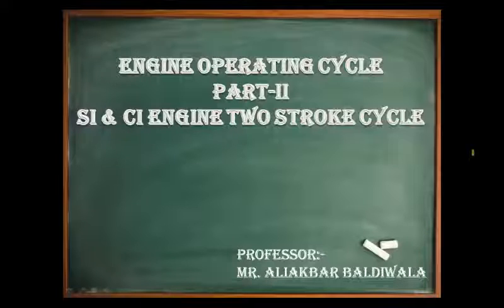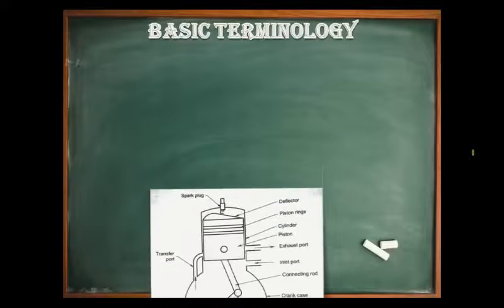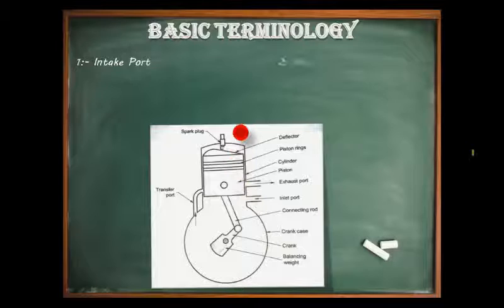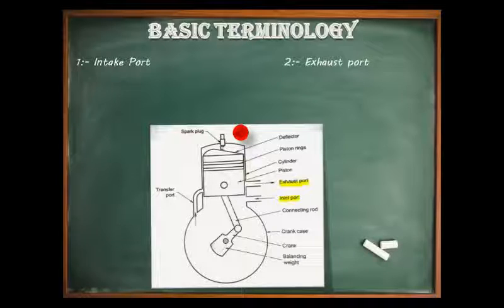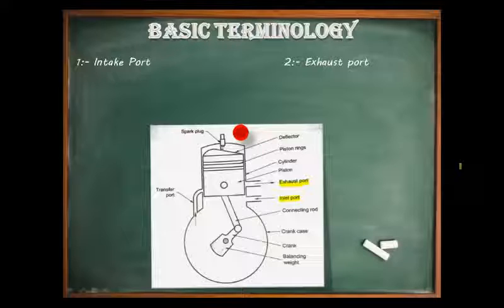Before jumping to the working cycle of a SI engine, let us first clear some basic terminology used in two-stroke engines. First is intake port and second is exhaust port, as we can see in this picture. In contrast to the four-stroke engine which uses inlet and exhaust valves controlled by a cam and camshaft mechanism, a two-stroke engine employs a port mechanism which doesn't require any sophisticated technique. All functions of intake and exhaust port are controlled solely by the piston covering and uncovering the port as it moves up and down in the cylinder.